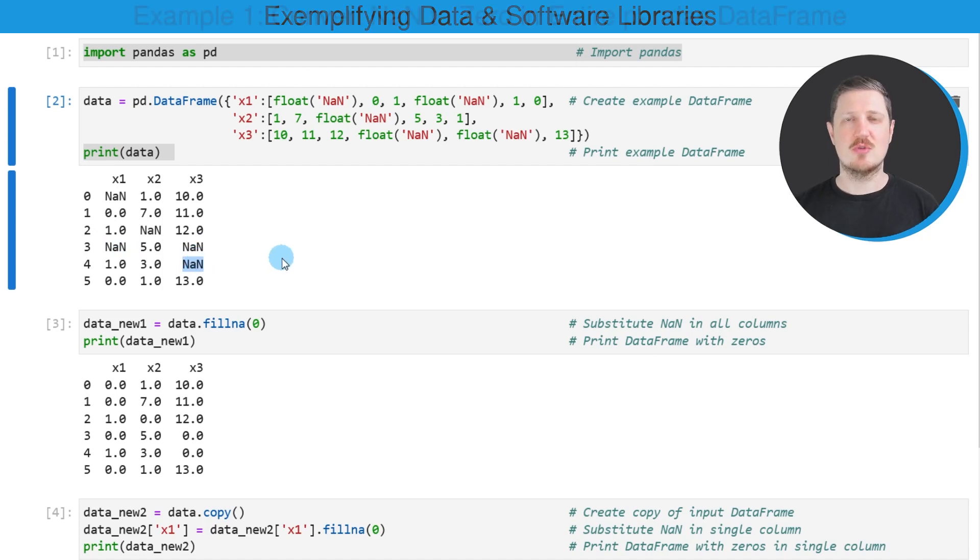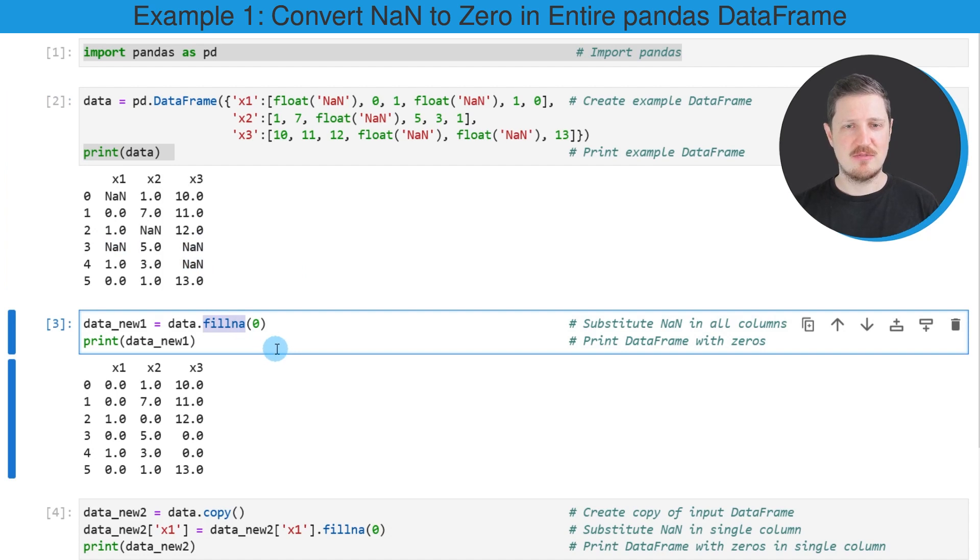Let's assume that we want to replace all the NAN values in all the columns of our data frame. Then we can apply the fillNA function, as you can see in the next line of code. In this case, I'm specifying the name of our input data frame, then I'm using the fillNA function.